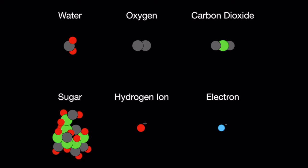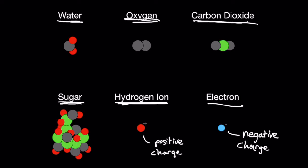Let's look at an example reaction. Here we have graphics of water, oxygen, CO2, and sugar as an example substrate. The bacteria will produce positively charged hydrogen ions and negatively charged electrons.